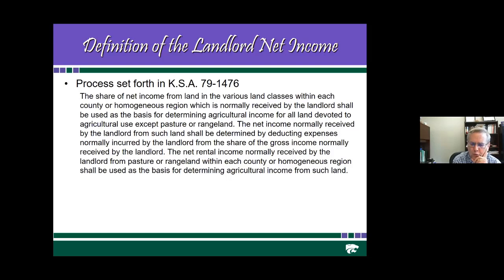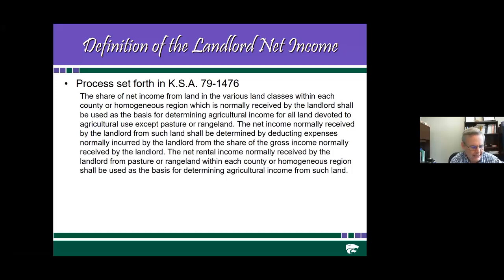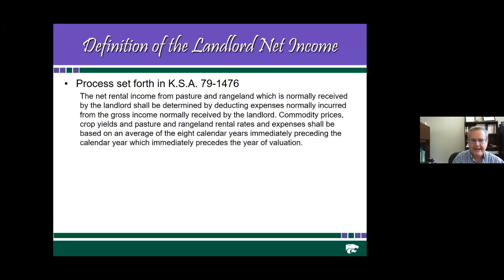This is the basis for determining agricultural income for all land except pasture or rangeland, for which the process is a little bit different. The net income normally received is determined by deducting expenses normally incurred by the landlord from the share of gross income normally received by the landlord. For pasture or rangeland, because there isn't pasture or rangeland information at the county basis, what's done is the crop reporting district — the nine homogeneous regions in Kansas — is used, and the net rental or cash rental income received by the landlord determines agricultural income from pastureland.